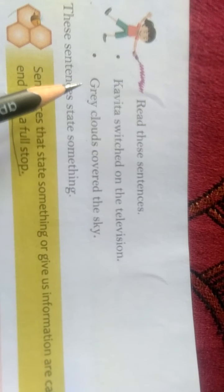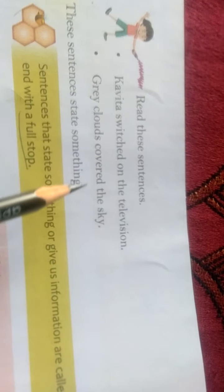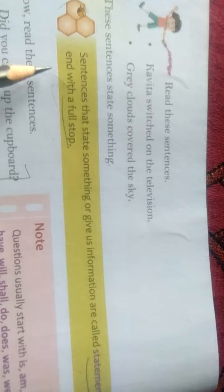Now, page number 2. There are two sentences given. Now, sentences that state something or give us information are called statements. They end with a full stop. Jo sentences hame kuch batate hain, ya phir kisi bhi tarah ki information dete hain, unko hum bolte hain statements. And ye always full stop ke saath end hote hain. So students, you have to keep this thing in your mind. That statements always end with a full stop.